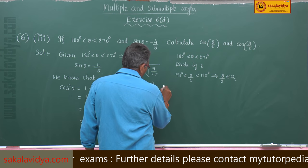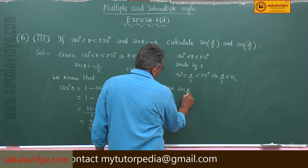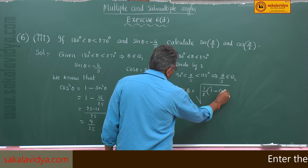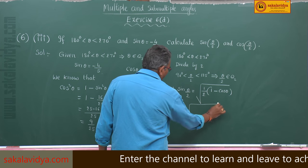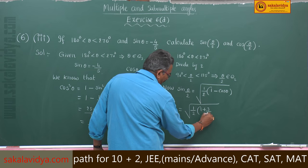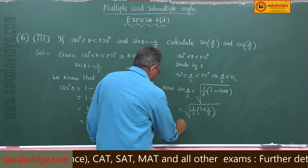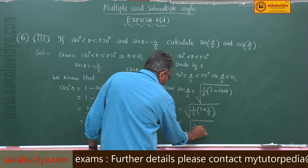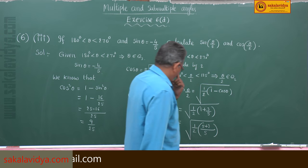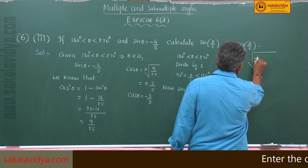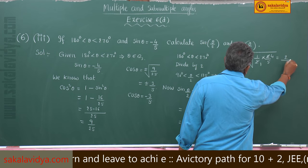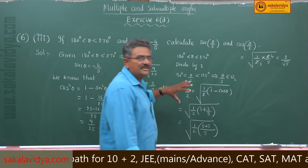sin(θ/2) = √[(1 − cos θ)/2]. Substituting cos θ = −3/5: = √[½ × (1 + 3/5)] = √[½ × 8/5] = √[4/5] = 2/√5. So sin(θ/2) = 2/√5.